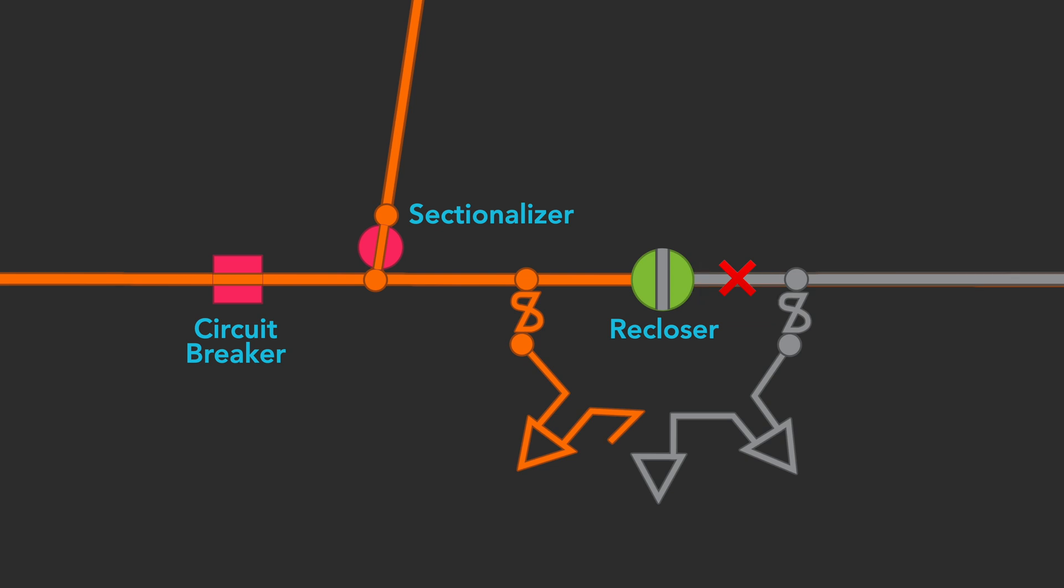To see how each component works in the system, we'll remove all of the parts of the drawing except the circuit breaker and the feeder line. Now we can build our system of coordinated protection one step at a time.